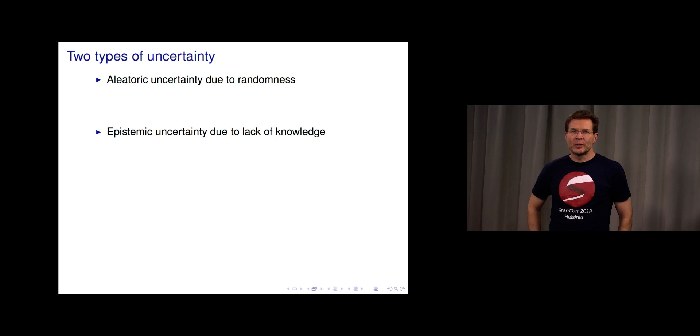There are two types of uncertainty: aleatoric uncertainty due to randomness and epistemic uncertainty due to lack of knowledge.